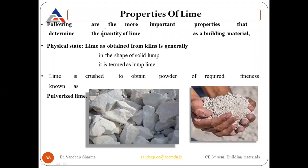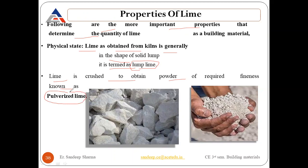The following are the important properties that determine the quality of lime as a building material. The physical state of lime as obtained from the kiln is generally in the shape of a solid lump, termed as lump lime. Lime is crushed to obtain a powder of required fineness, which is known as pulverized lime.